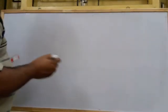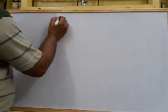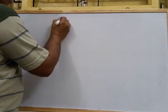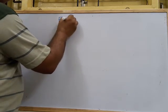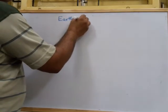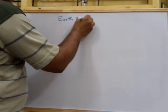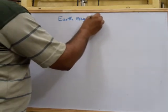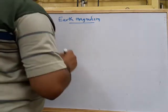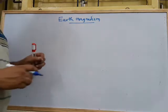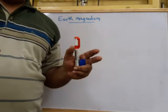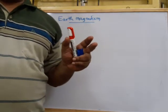Our next topic is Earth Magnetism. The meaning of this is that our Earth is also a magnet — a very big magnet.